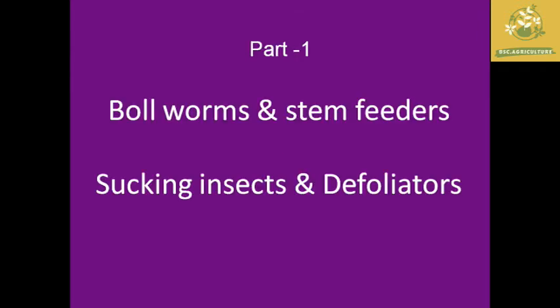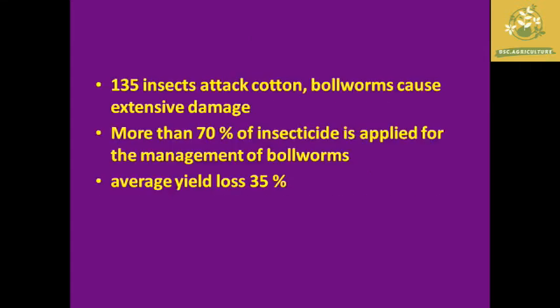Part 1 consists of boll worms, stem feeders, sucking pests, and defoliators. As a small introduction about cotton, around 135 insects attack cotton. Boll worm cases cause extensive damage and are particularly noted.